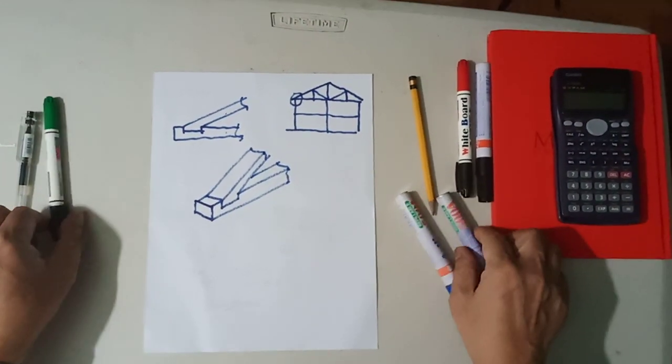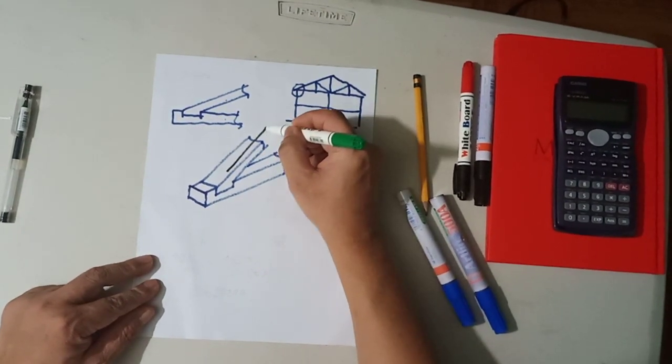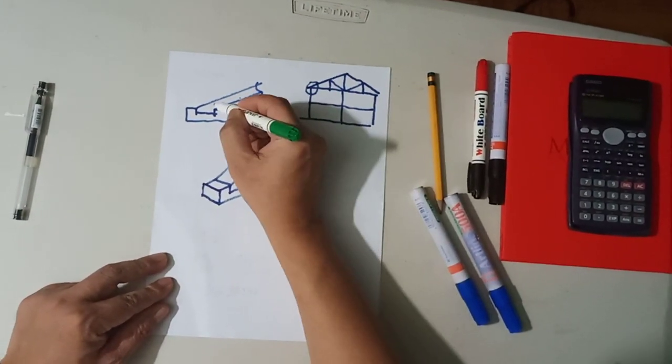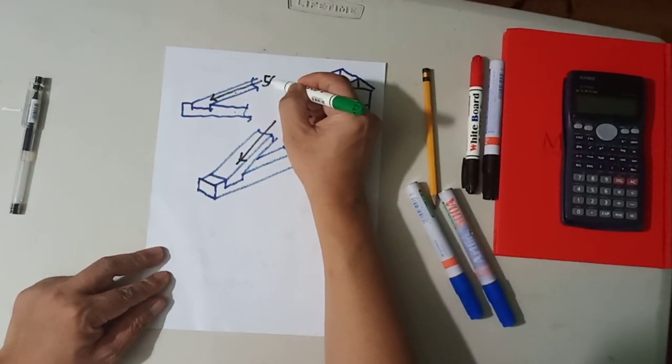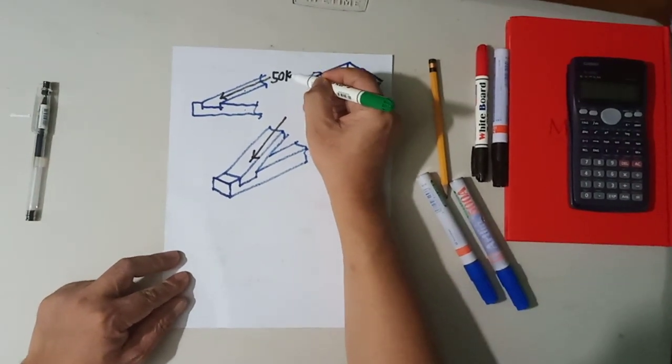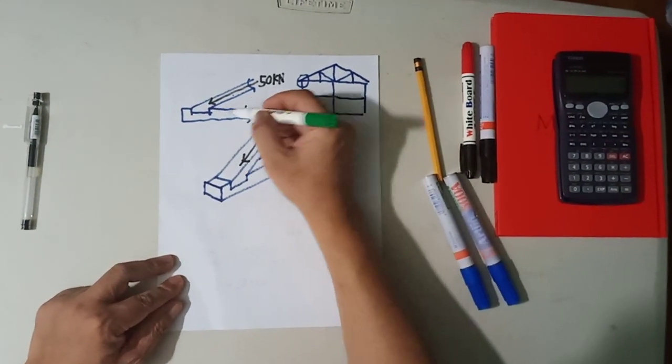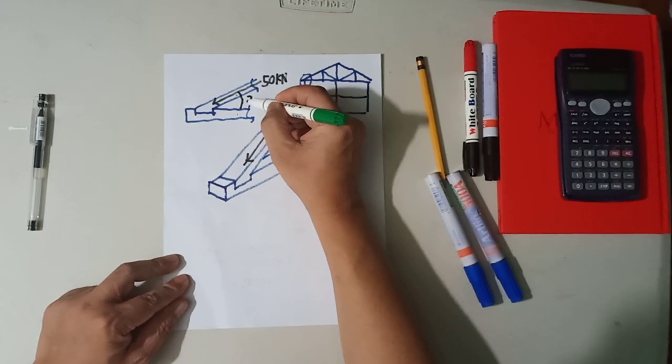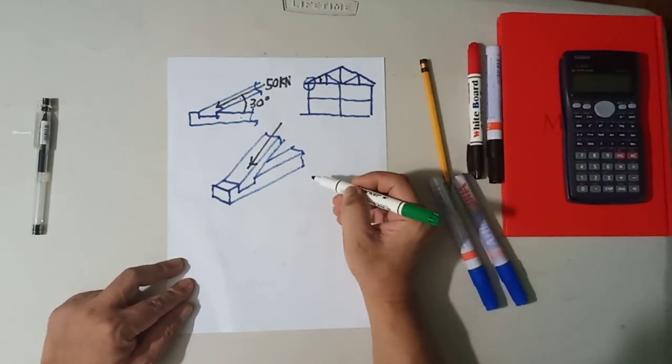Now, in that problem that was given to you, your top chord has a force acting along this area, a force of 50 kilonewtons. And that force of 50 kilonewtons is acting at an angle of 30 degrees from the horizontal, so this is equivalent to 30 degrees.